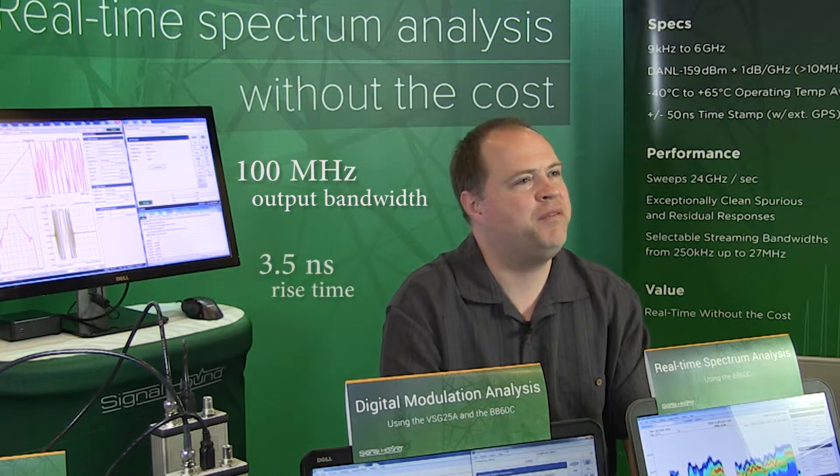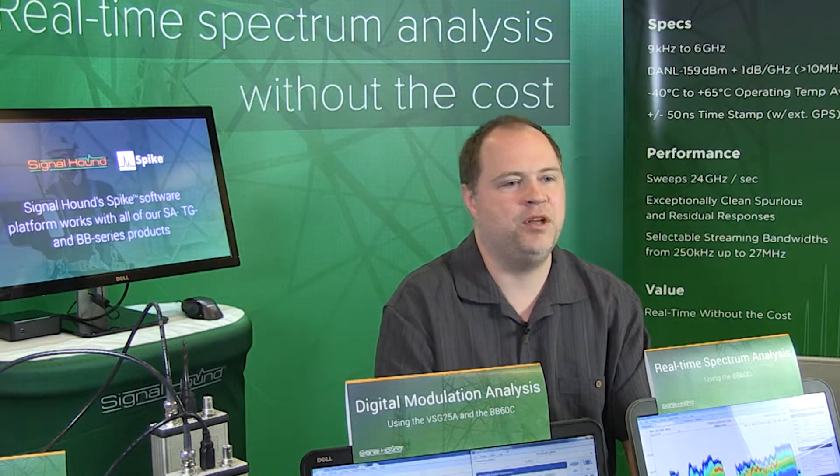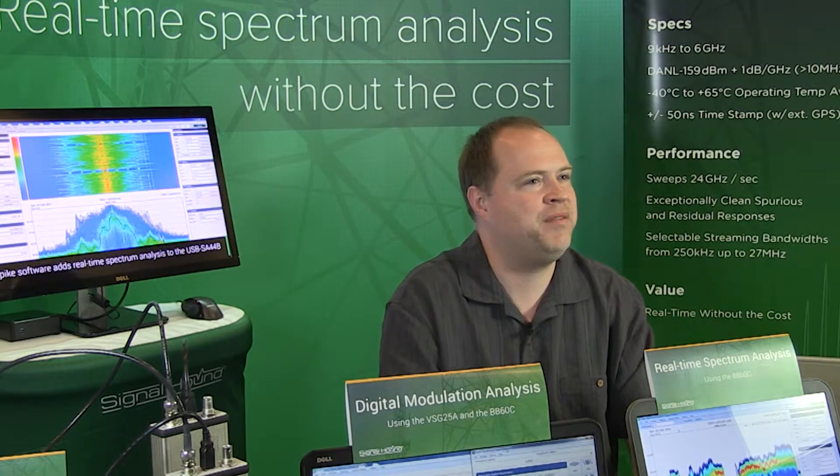What other notable characteristics does it have? Well, it does have 100 MHz of output bandwidth. And it also has a 3.5 nanosecond rise time for the pulses. That means it would be great for testing maybe some radar simulations. It can also produce arbitrary waveforms. So if you want an FM chirp or something, it's a piece of cake for the VSG25A.